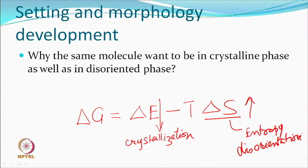All molecules generally would like to disorient and remain in a disorganized fashion, increasing the entropy of the system - that is considered a stable state. Any molecule, polymeric or otherwise, in a disoriented state has complete freedom of movement and orientation. On the other hand, crystallization means every atom in the molecule has found a specific place in a completely ordered three-dimensional space.